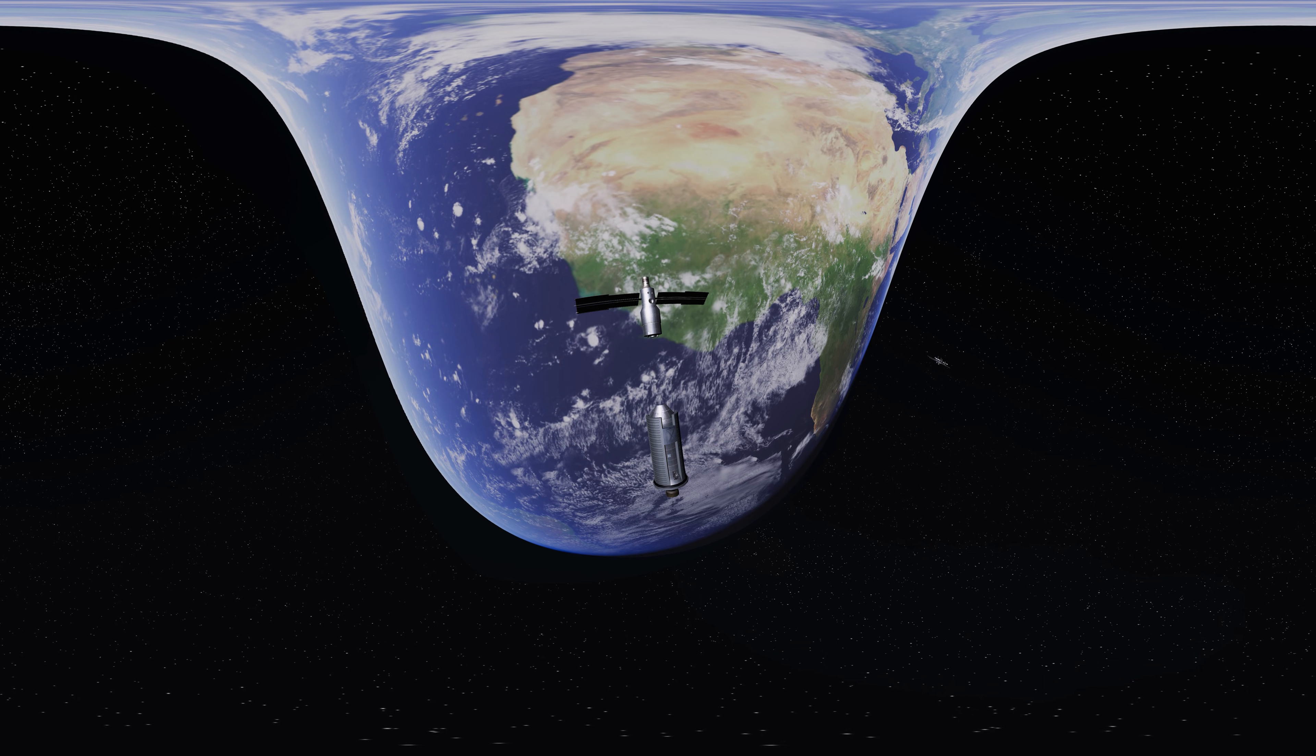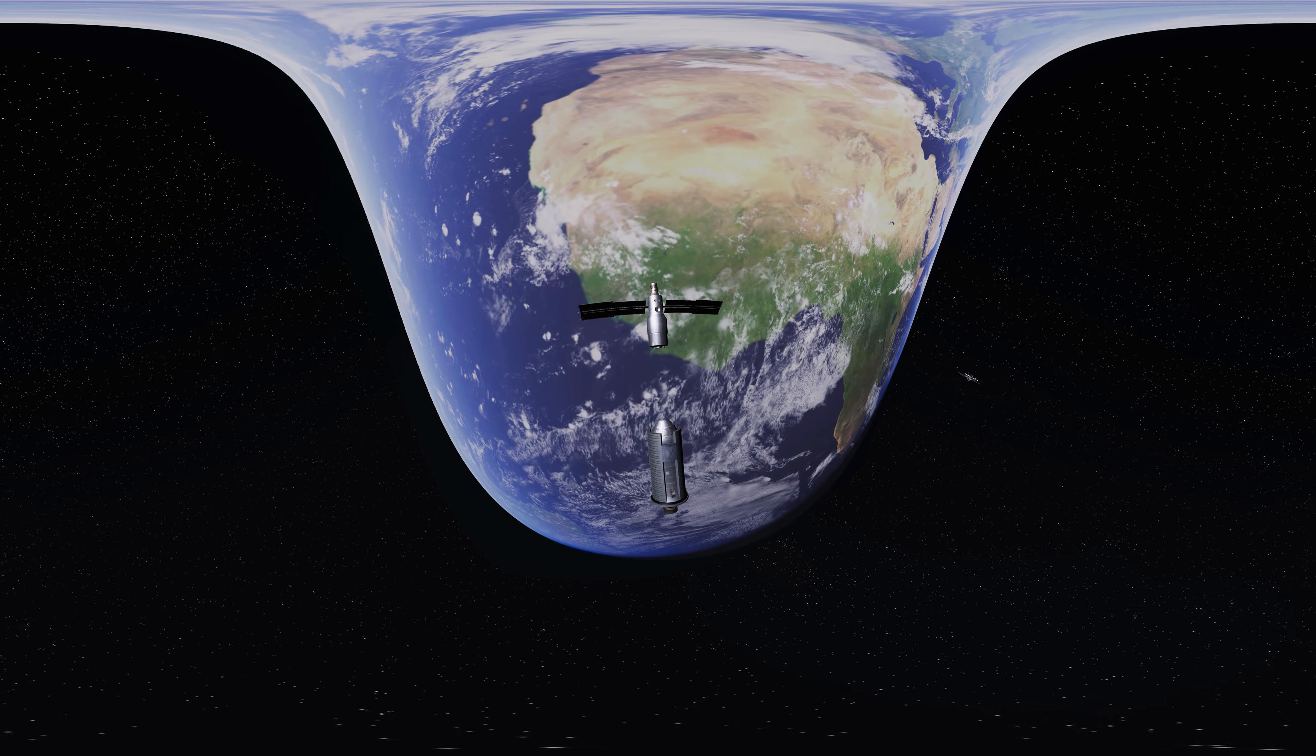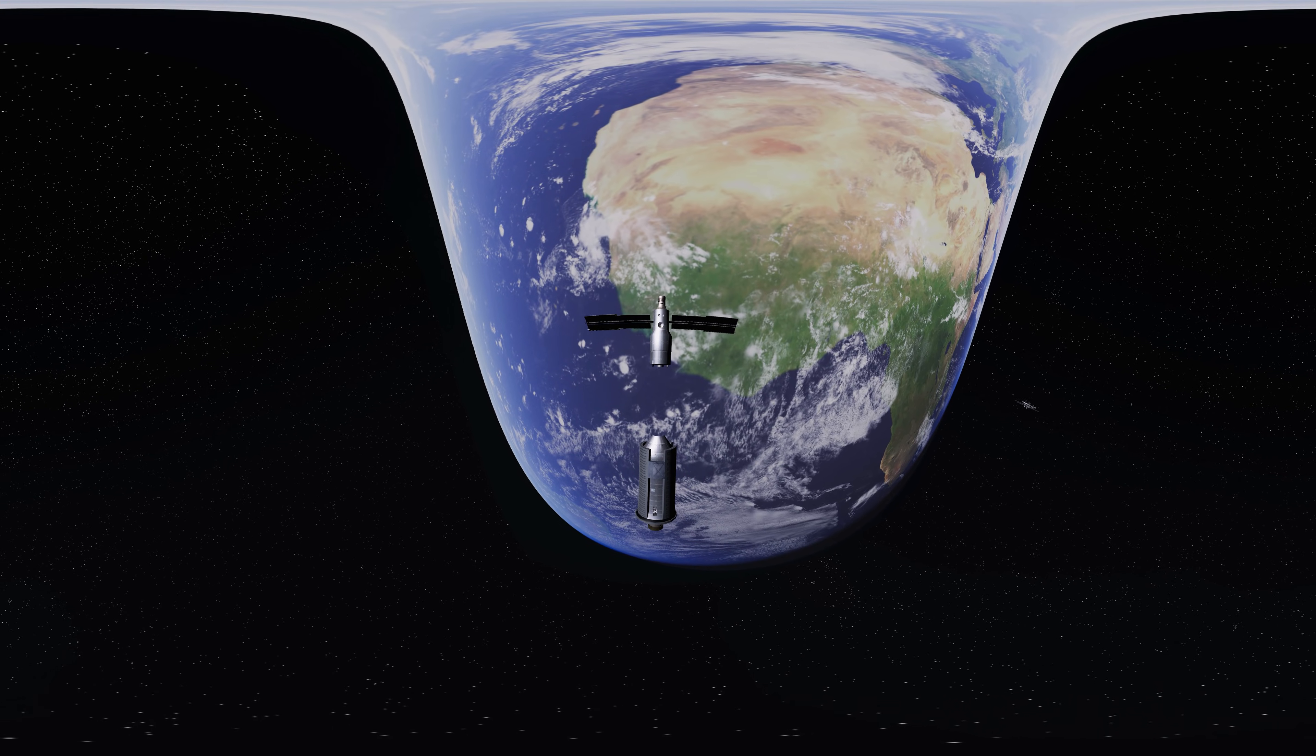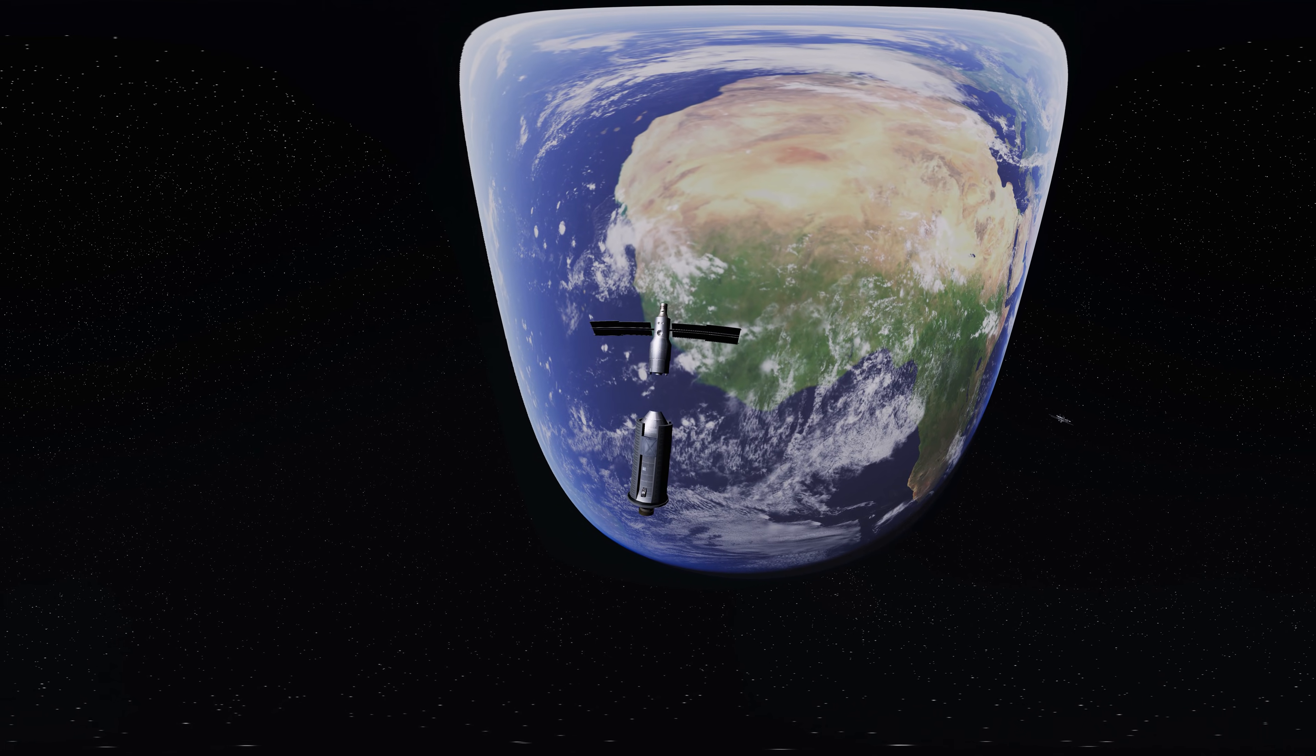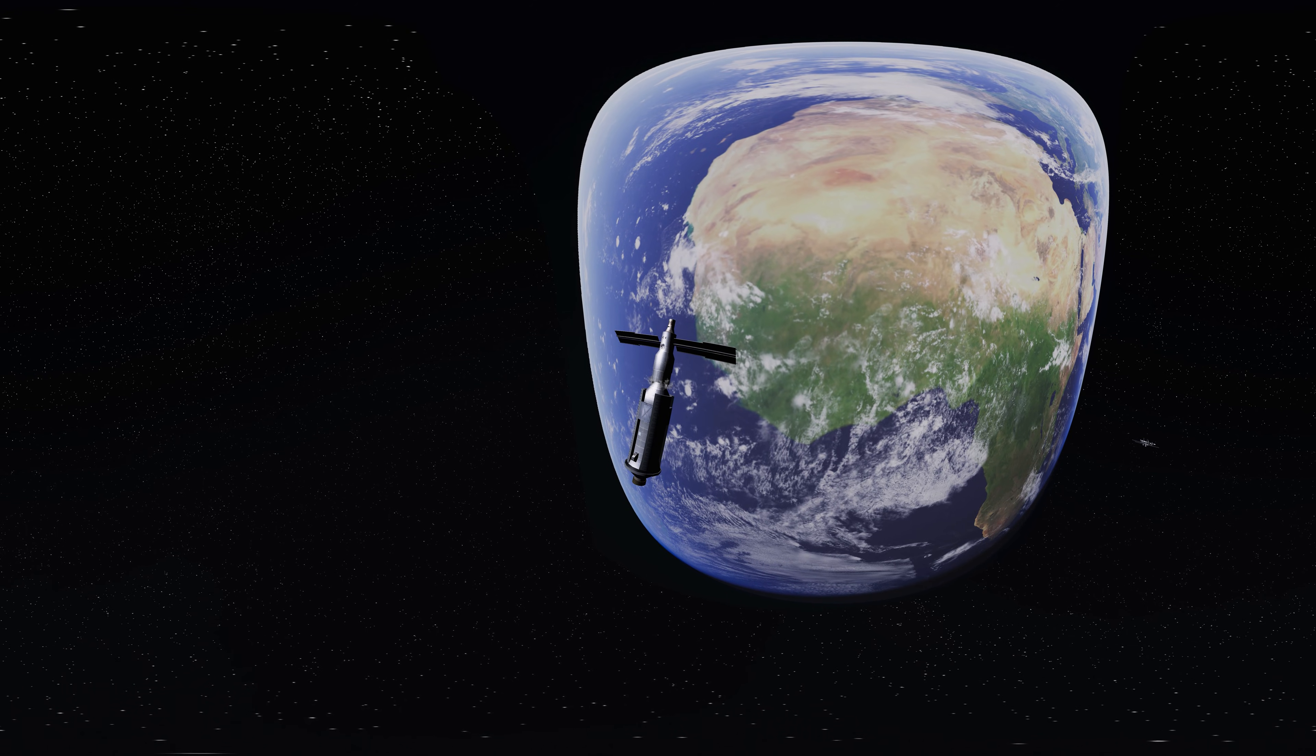Unity module was supposed to catch up with Zarya in space, traveling at a speed of 27,000 kilometers per hour. Despite several connecting issues, they were combined and the International Space Station was created.